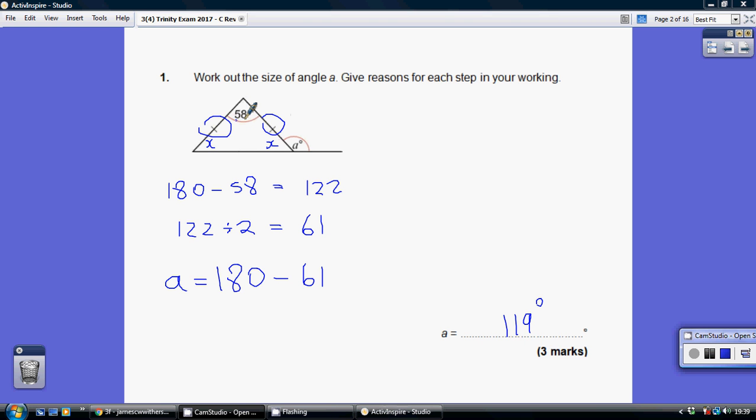We know the angles in the triangle add up to 180, so 180 take away 58 is 122, so these two angles together add up to 122. Now they're equal, so how do we work out what each of them is? Well, they add up to 122 and they're the same, so you halve the 122 to get 61.